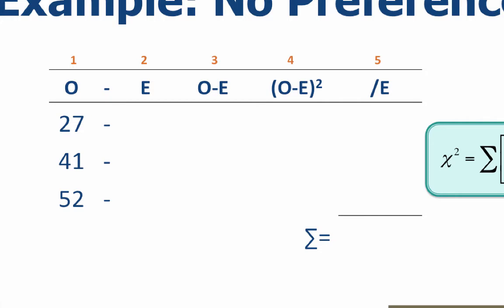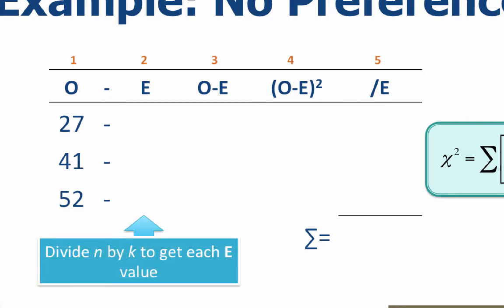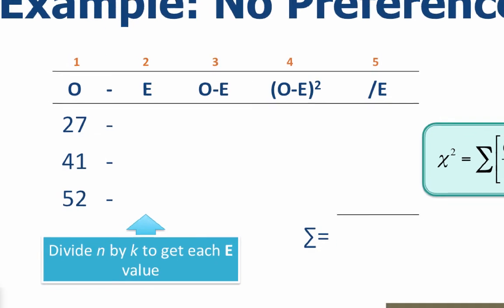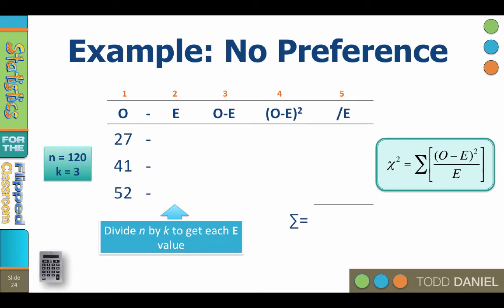Now we need the expected values. We need to divide n, or the total sample size, by k, the total number of choices, to get the expected value for each category. We received 120 votes, and you could determine this by either adding up the O values or just read it from the word problem. We assume that there is no preference among the three chairs, so each one should be chosen equally by the 120 red-cloaked schoolgirls. Divide n by k to get each expected value, and conveniently enough, the n of 120 divides easily by three, leaving us with an expected value of 40 for each chair. And good news, all of our expected values are greater than five.